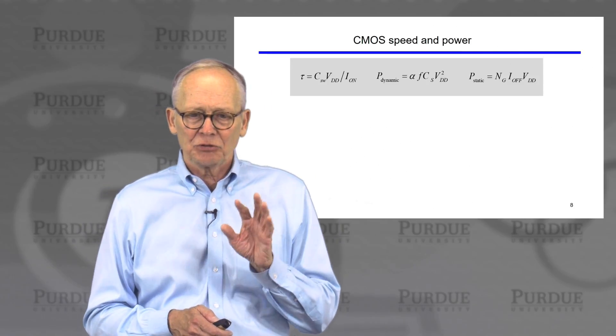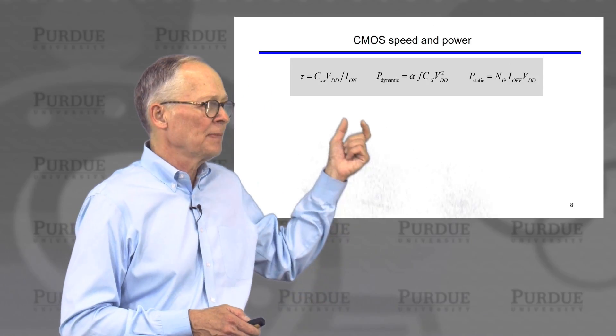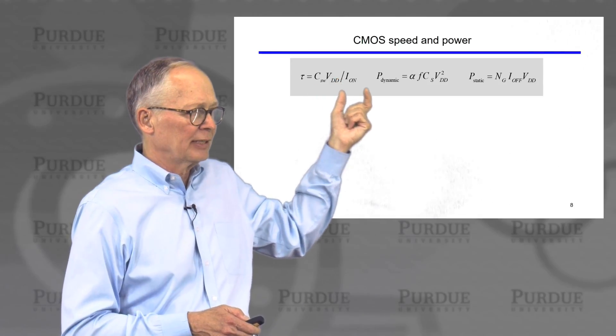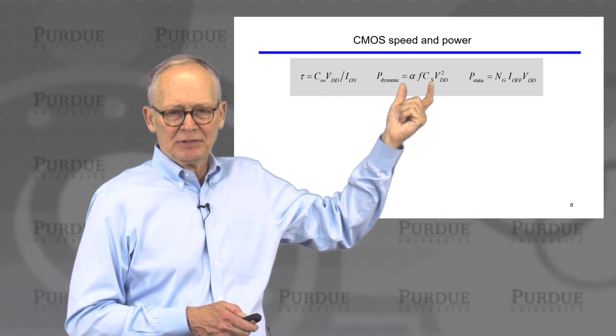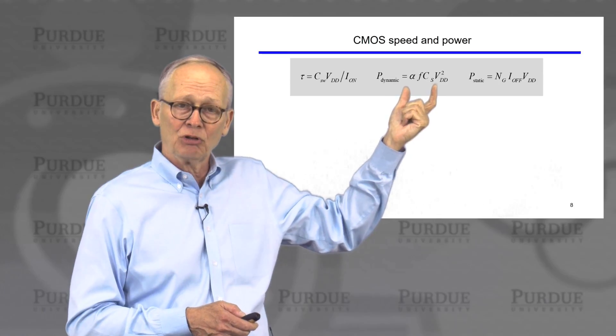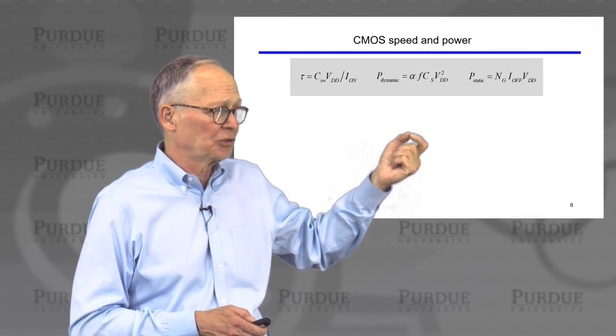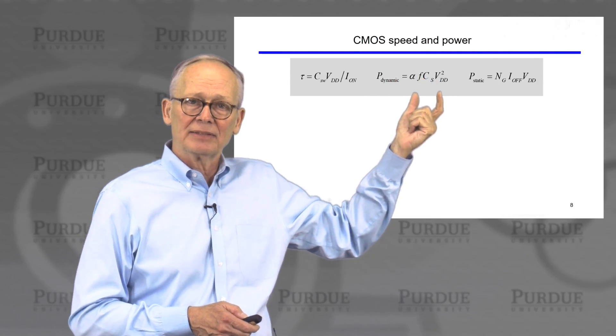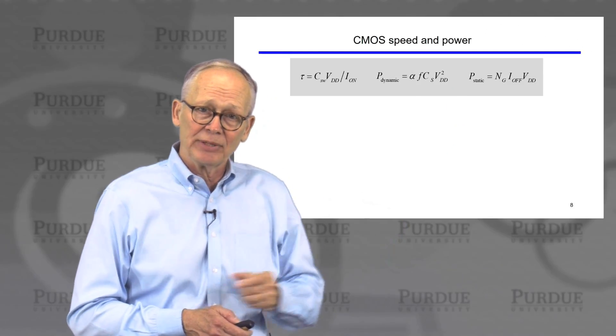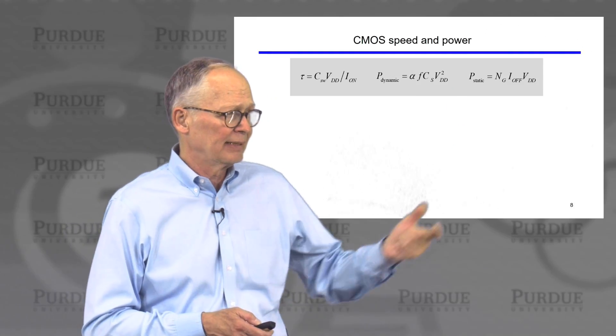So, CMOS speed and power are summarized here. Speed is determined by on-current. Power, the power supply voltage plays a very important role because dynamic power goes as voltage squared. Frequency plays a very important role. The faster we operate it, the more power we dissipate.